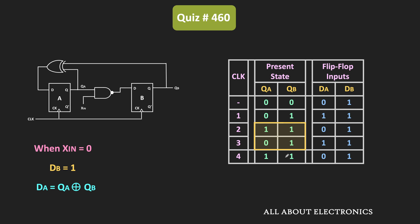So we can say that if input xin is kept at logic level 0, then the output of this FSM will go through two different states: 0,1 and 1,1.